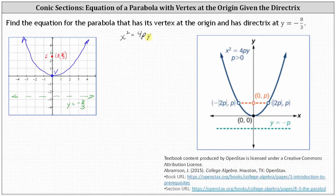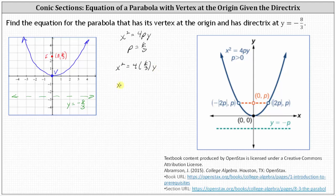Because the parabola opens up, p is positive. The focus is the point zero comma p, and therefore p is 8 thirds. Our equation is x squared equals 4 times 8 thirds times y. Nothing simplifies here — we have x squared equals 32 thirds y.